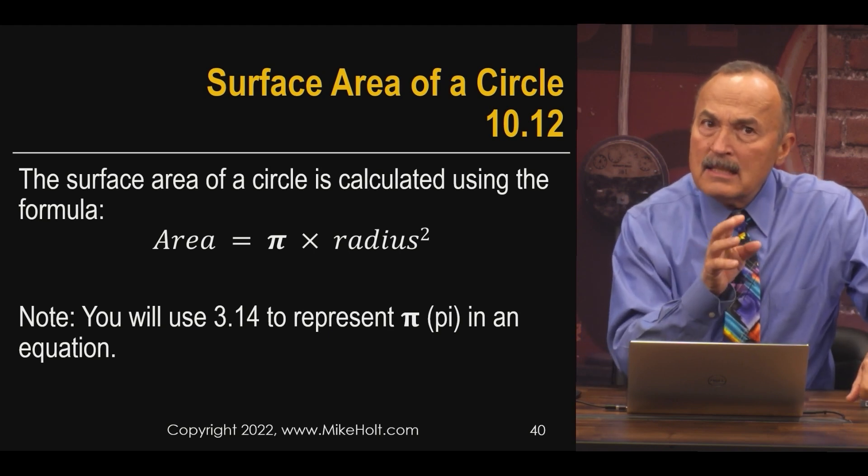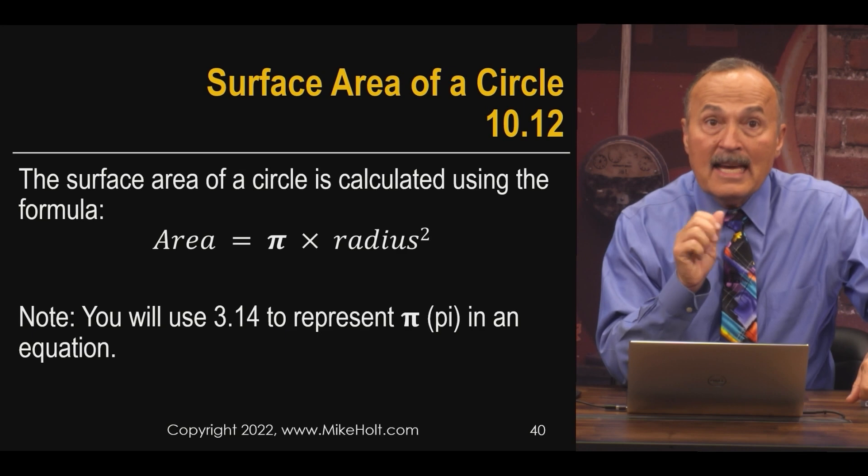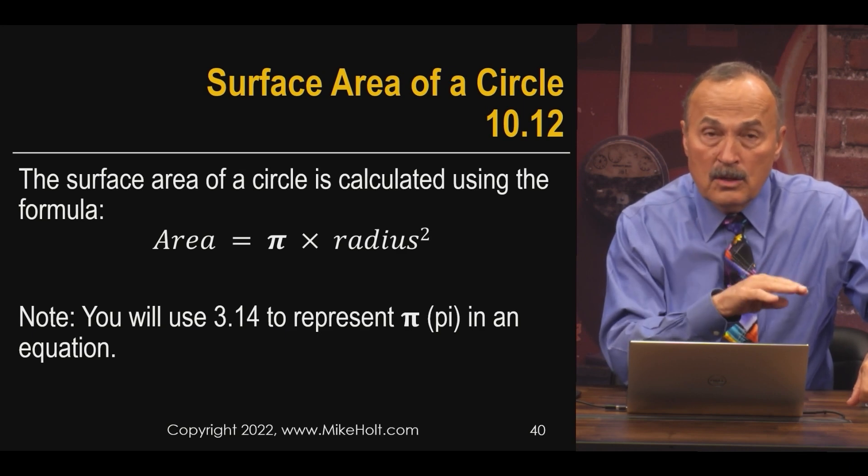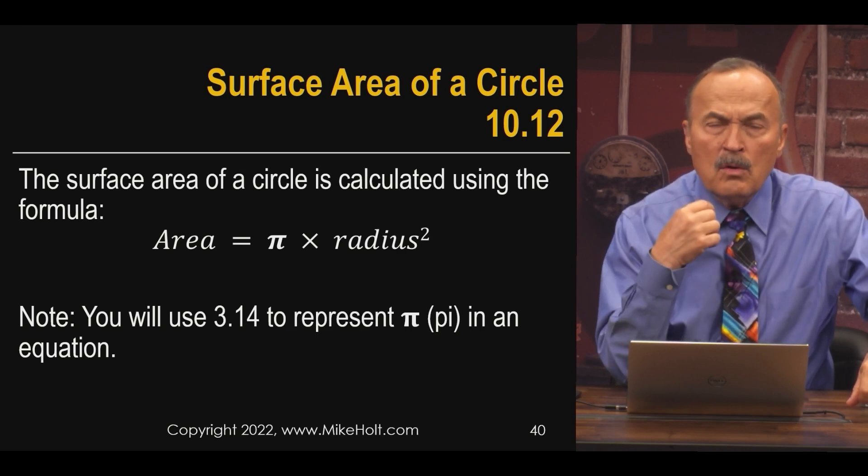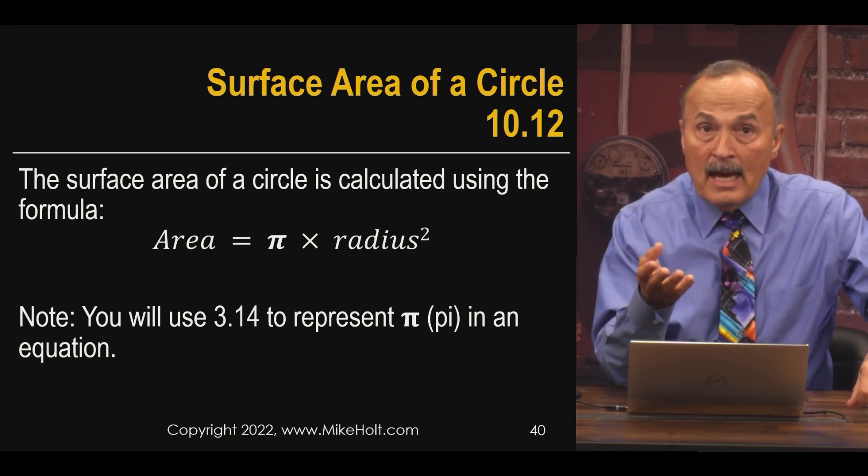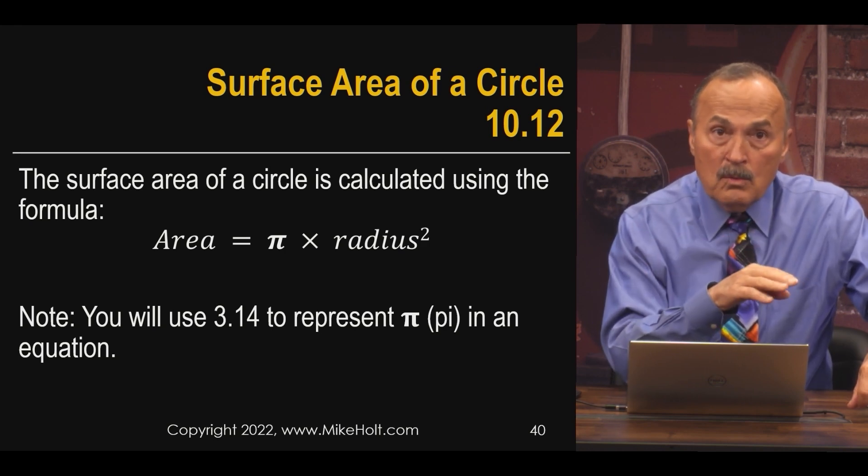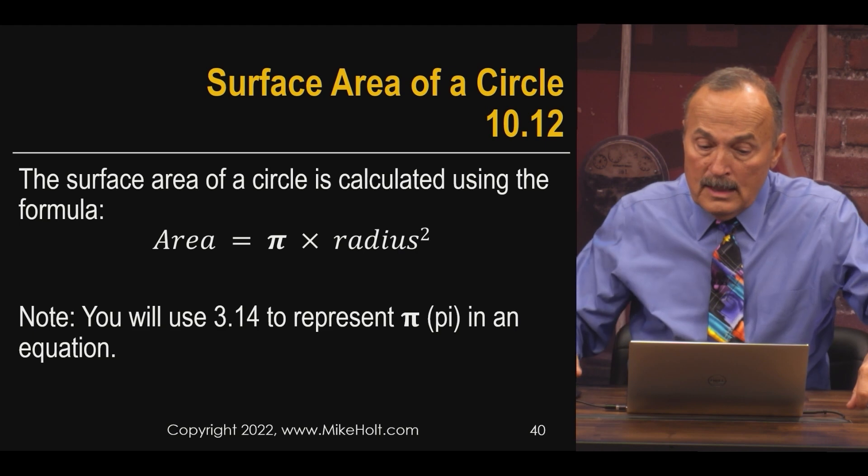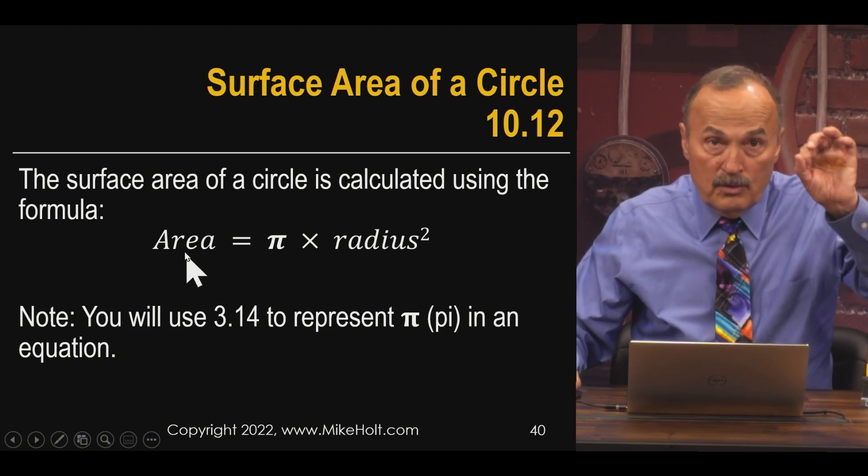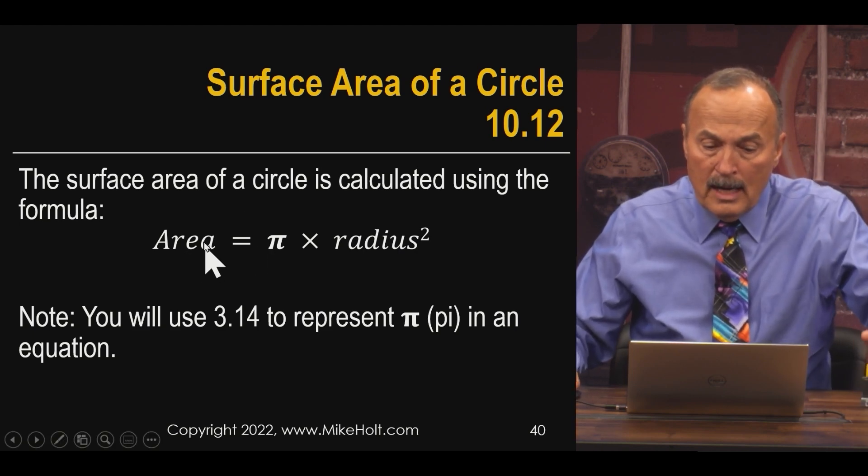But sometimes you're going to get wires that are not actually listed in the code book, or you might even get cables that won't be listed. Then you need to be able to figure out how many wires or cables can I put in this particular raceway. Well, then you need to know the formula.